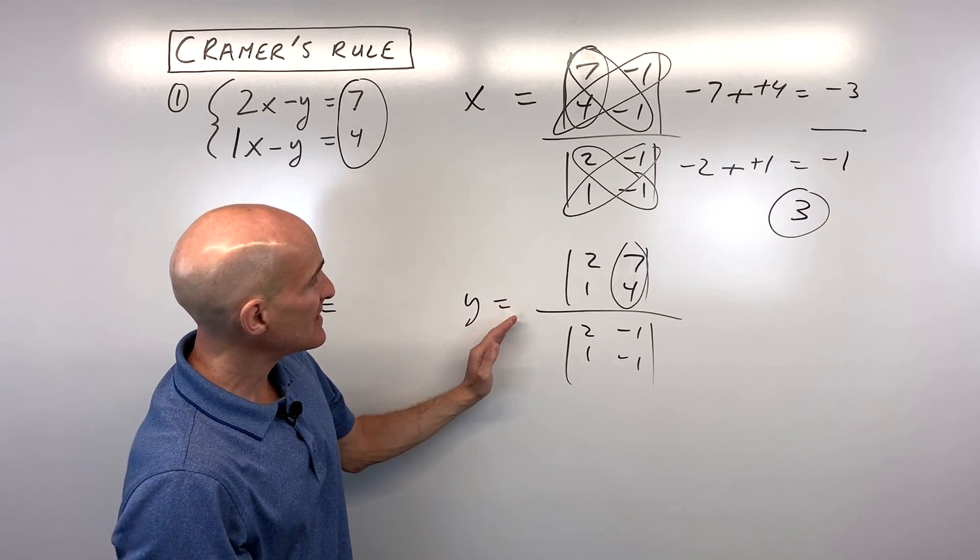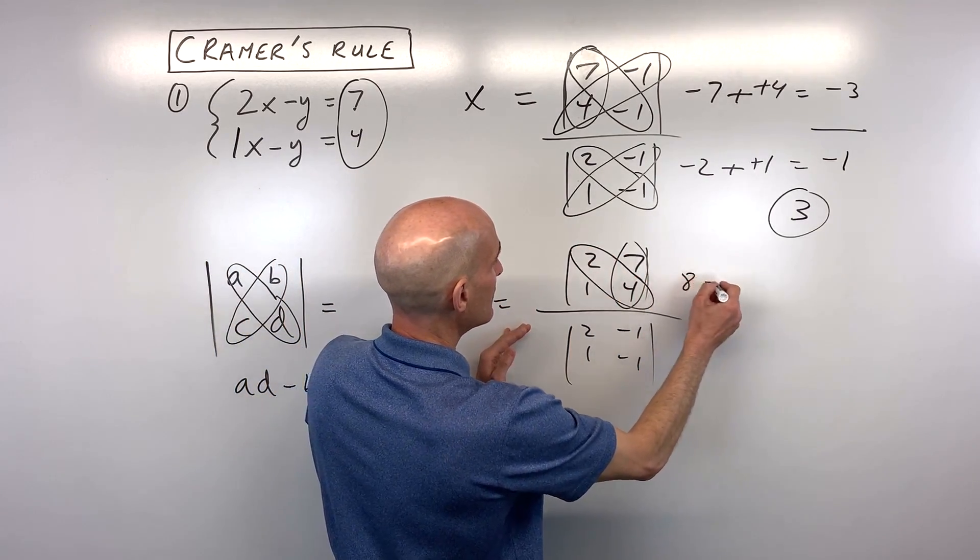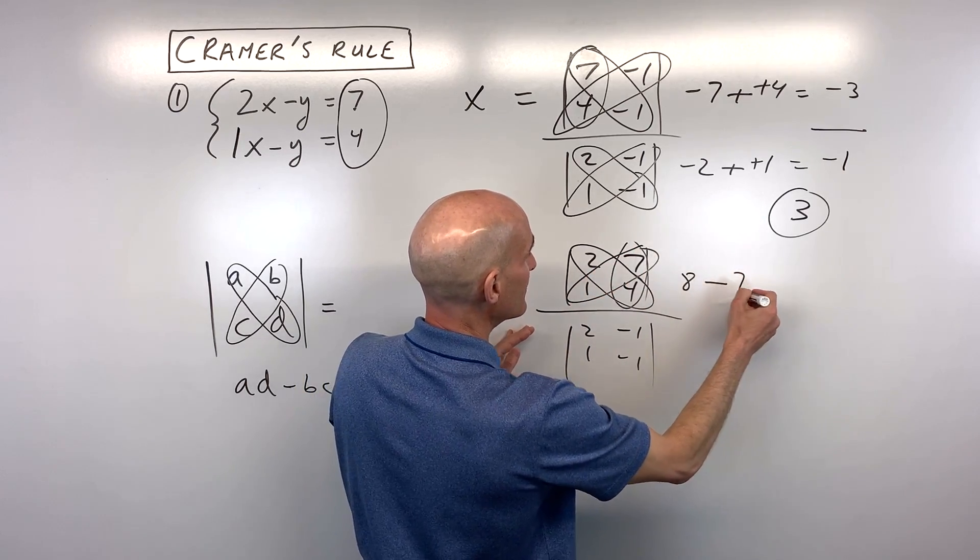For y, it's going to be the exact same thing. We take this diagonal, 8, minus this diagonal, 7. So that's 1.